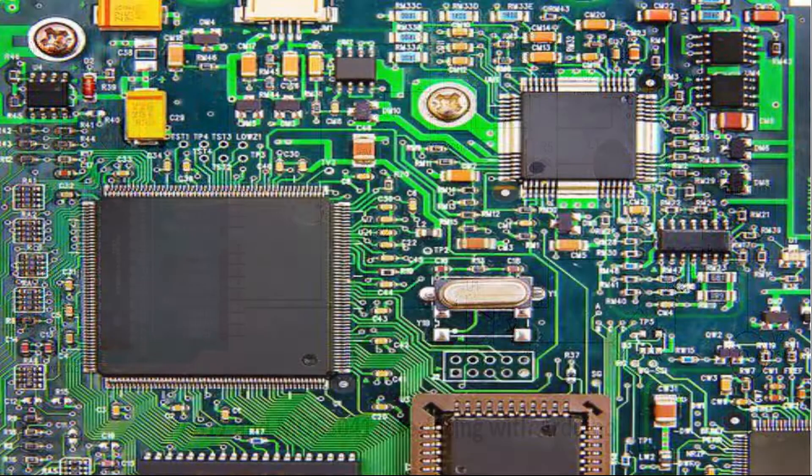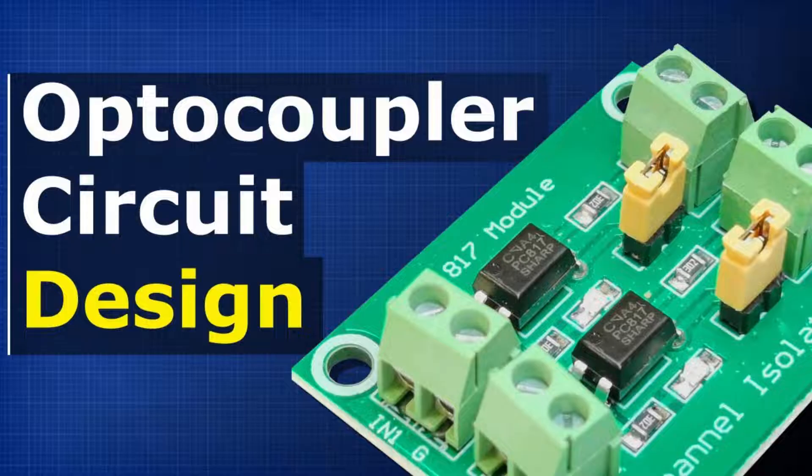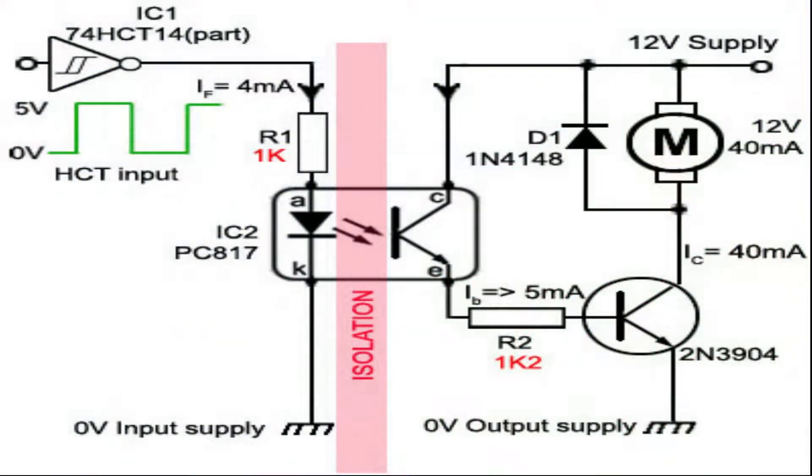When you need to protect sensitive low voltage components and isolate circuits on your PCB, optocoupler is the device that can do this job. This device allows you to transmit an electrical signal between two isolated circuits.